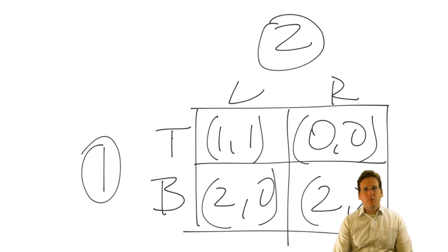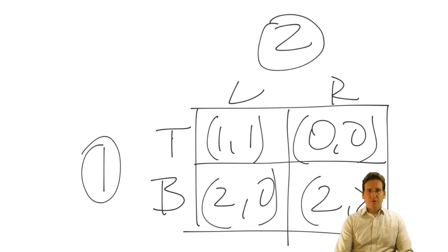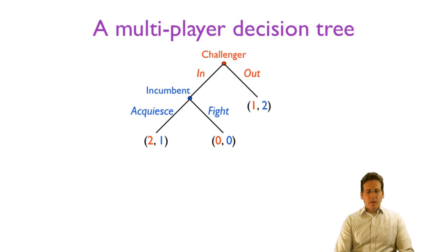That works in a lot of cases, but many times we actually have to describe the temporal structure of the game. Player 2 may move first, or maybe player 1 moves first. And then player 2, if player 1 were to move first, would already know the choice that player 1 is making, and that would be a different kind of game. To describe a game like that, we need the extensive form.